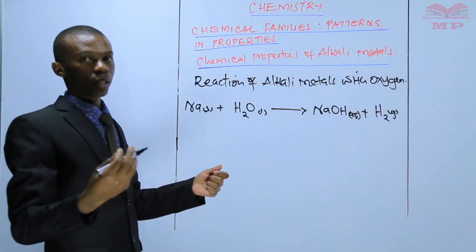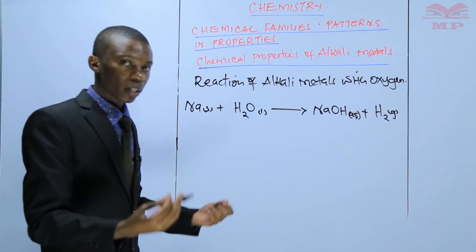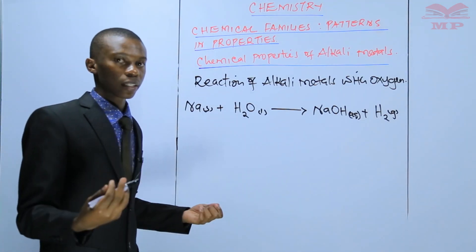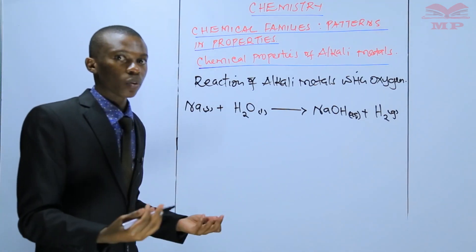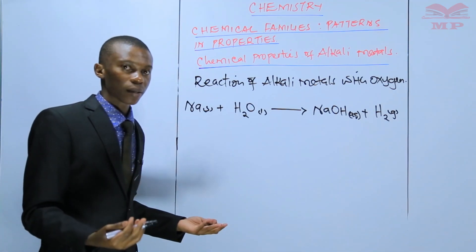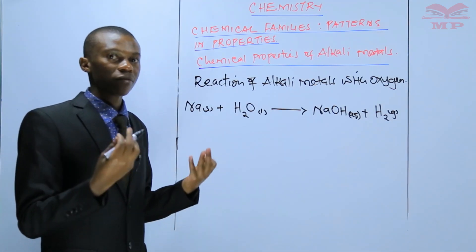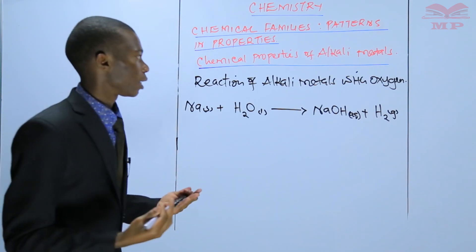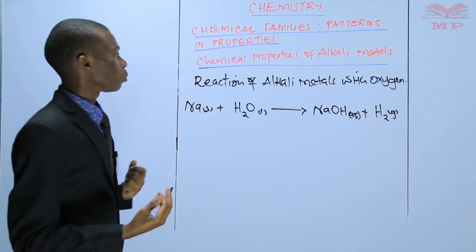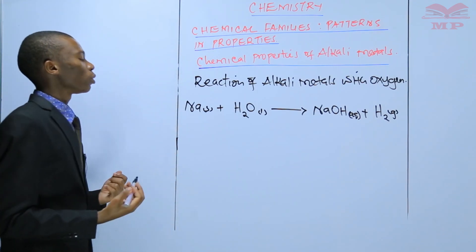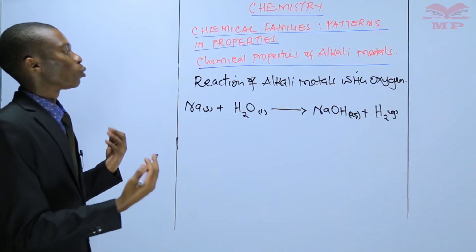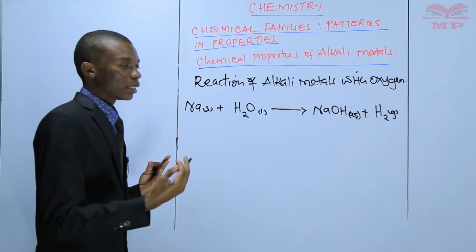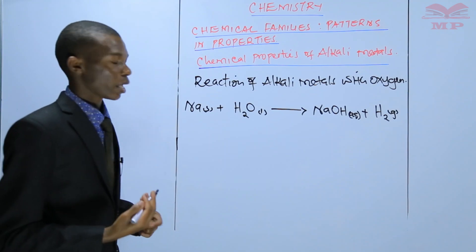Remember, in the previous topic, we said that a correct chemical equation is supposed to be balanced, the chemical symbols are supposed to be right, and physical states should be included. Therefore, our equation is not balanced. To balance it, you need to balance the number of atoms on both the reactant and the product side.